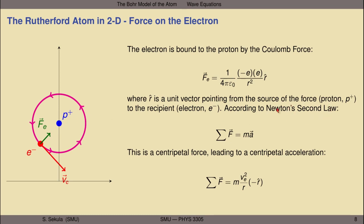According to Newton's second law, the sum of all forces on the electron will be simply summarized by its mass times its net acceleration. The acceleration this electron experiences as it orbits the proton is a centripetal acceleration — a center-seeking force resulting in a center-seeking acceleration, constantly changing the direction of the electron's velocity vector. So the net acceleration of this electron has a well-defined form: it's given by v² over r in magnitude, and its direction — center-seeking — will point to the center of the circular motion, which is in the direction of negative r-hat, that is, from the electron to the proton, whereas r-hat is defined as being from the proton to the electron.